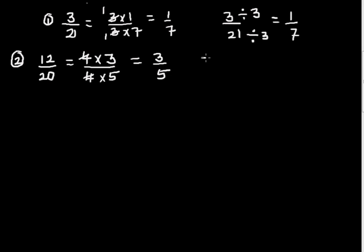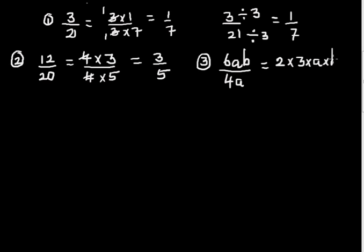Now let's bring this to algebra. The third question is 6ab divided by 4a. Write the numbers as a product of prime numbers: 6 is 2 times 3 times a times b, and the denominator is 2 times 2 times a. Cancel the 2s and cancel the a's. What remains is 3b on top divided by 2. So the answer is 3b/2.